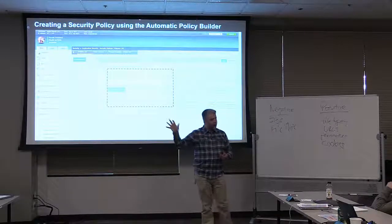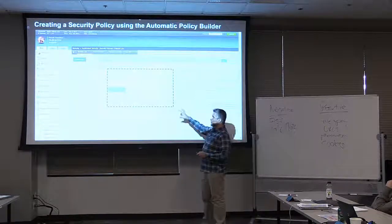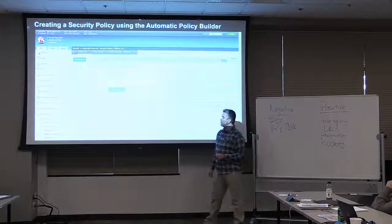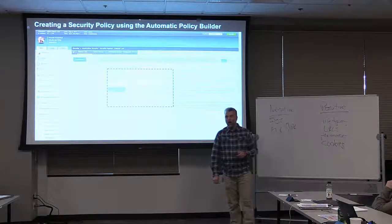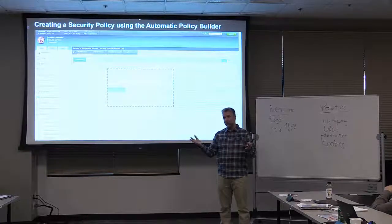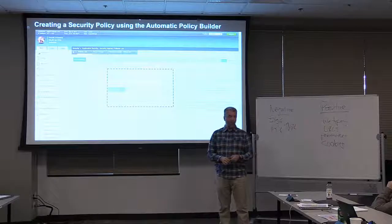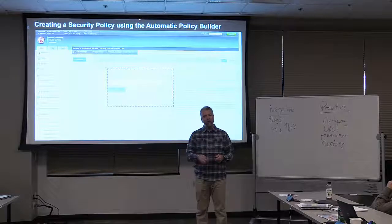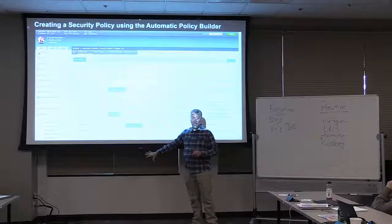Earlier we built a policy with just three fields: name, template, virtual server. But there's also an advanced option. Comprehensive and fundamental are two other policy templates that increase the number of enabled features. Rapid deployment has a base set of features enabled by default; fundamental has even more; comprehensive has the most. When you choose the advanced option, you see things like learning mode. Rapid deployment defaults to manual learning; comprehensive defaults to automatic learning — you can change that in either case.